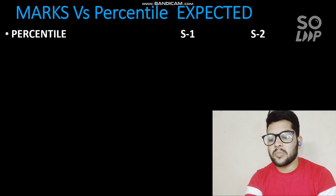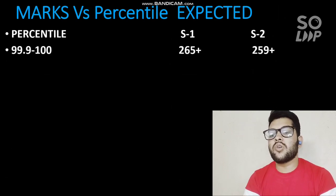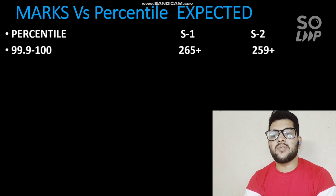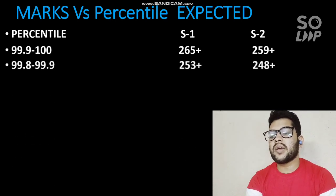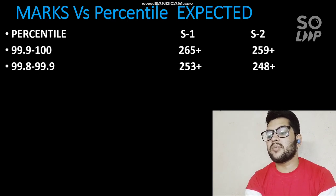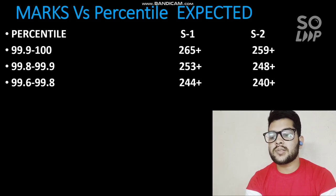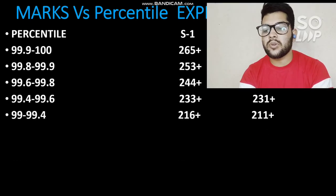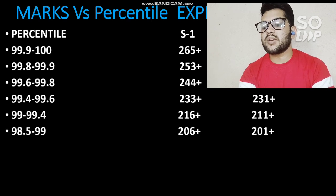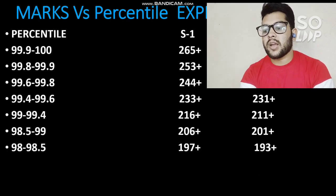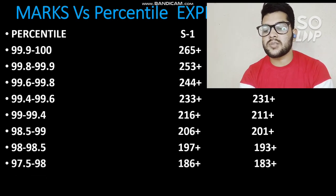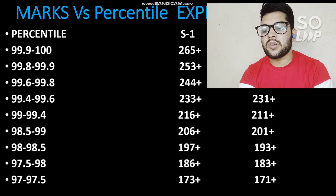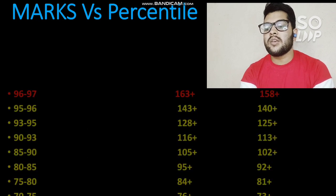Here is the marks versus percentile for Shift 1 and Shift 2. For 99.2/100 percentile in Shift 1: 265+ marks; Shift 2: 259+ marks. For Shift 1 specifically — 99.8 to 99.9 percentile: 253+ marks; 99.6 to 99.8: 244+ marks; 99.4 to 99.6: 233+ marks; 99 to 99.4: 216+ marks; 98.5 to 99: 206+ marks; 98 to 98.5: 197+ marks; 97.5 to 98: 186+ marks; 97 to 97.5: 173+ marks.